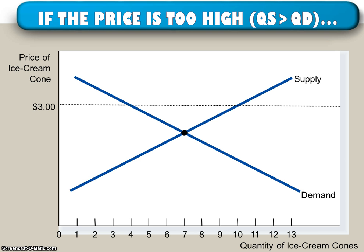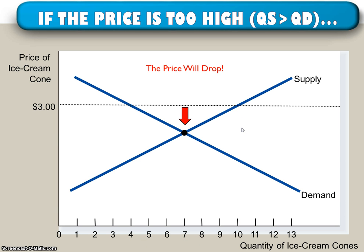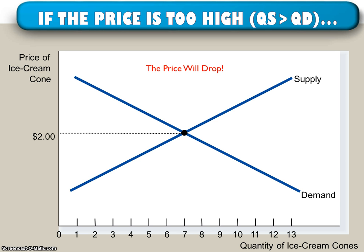If the price is too high in a market — because it is kind of a guessing game when producers are trying to set their prices — then the market will know because there will be what we call a surplus, meaning the quantity supplied at the market price is greater than the quantity demanded. There's extra left over at this high price that sellers want to sell but nobody wants to buy. When there's a surplus, the price drops. If Target has way too much of something it can't sell, it puts it on clearance. The market does the same thing — the price will drop on its own until it reaches the equilibrium.